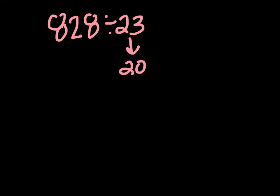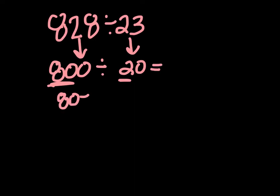So the first thing we're going to do is use our estimation and our compatible numbers to help us gauge what we think our answer might be. So I'm going to take 23, I'm going to estimate 23 to right about 20, and 828 I'm going to estimate to 800. So now I'm going to divide 80 by 2, which gives me 40. So 800 divided by 20 is also going to be 40.